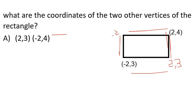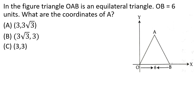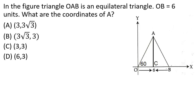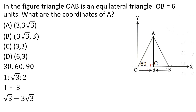In the figure, triangle OAB is an equilateral triangle and OB is equal to 6 units. What is the coordinate of A? This is an equilateral triangle — one angle is 60 degrees, here we have 90 degrees, and then automatically 30 degrees. The y-coordinate of A is 3√3. Option A.